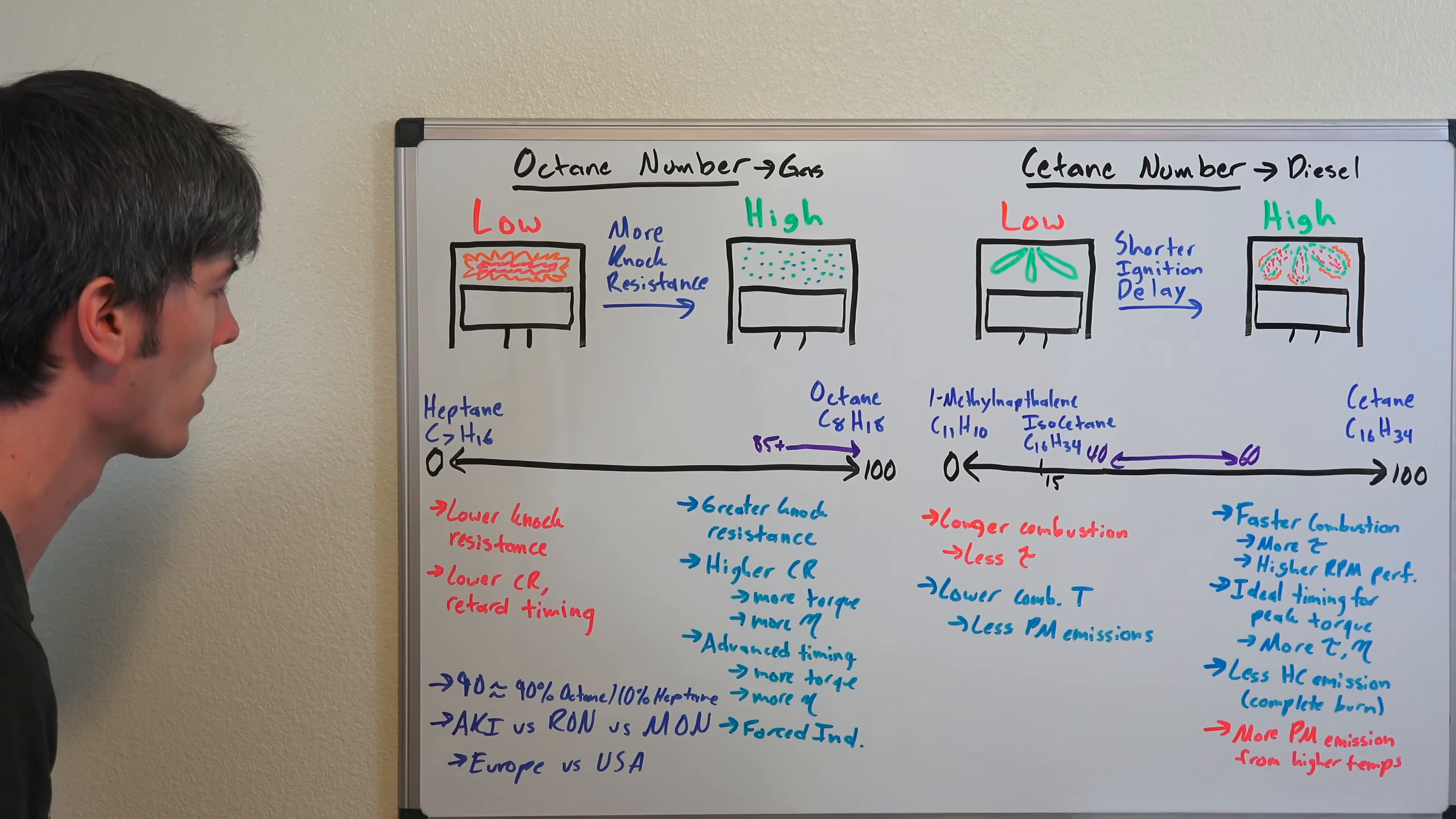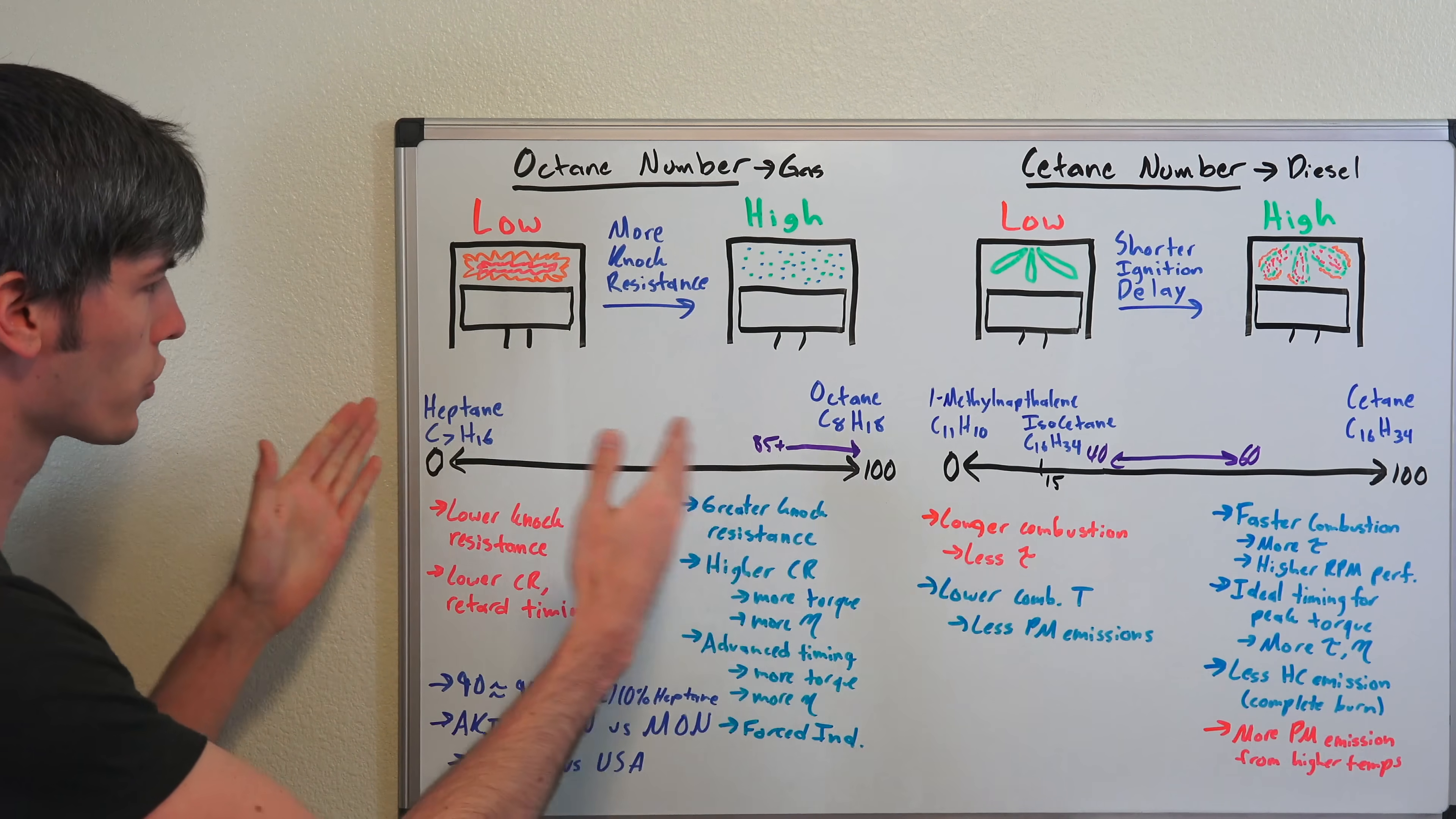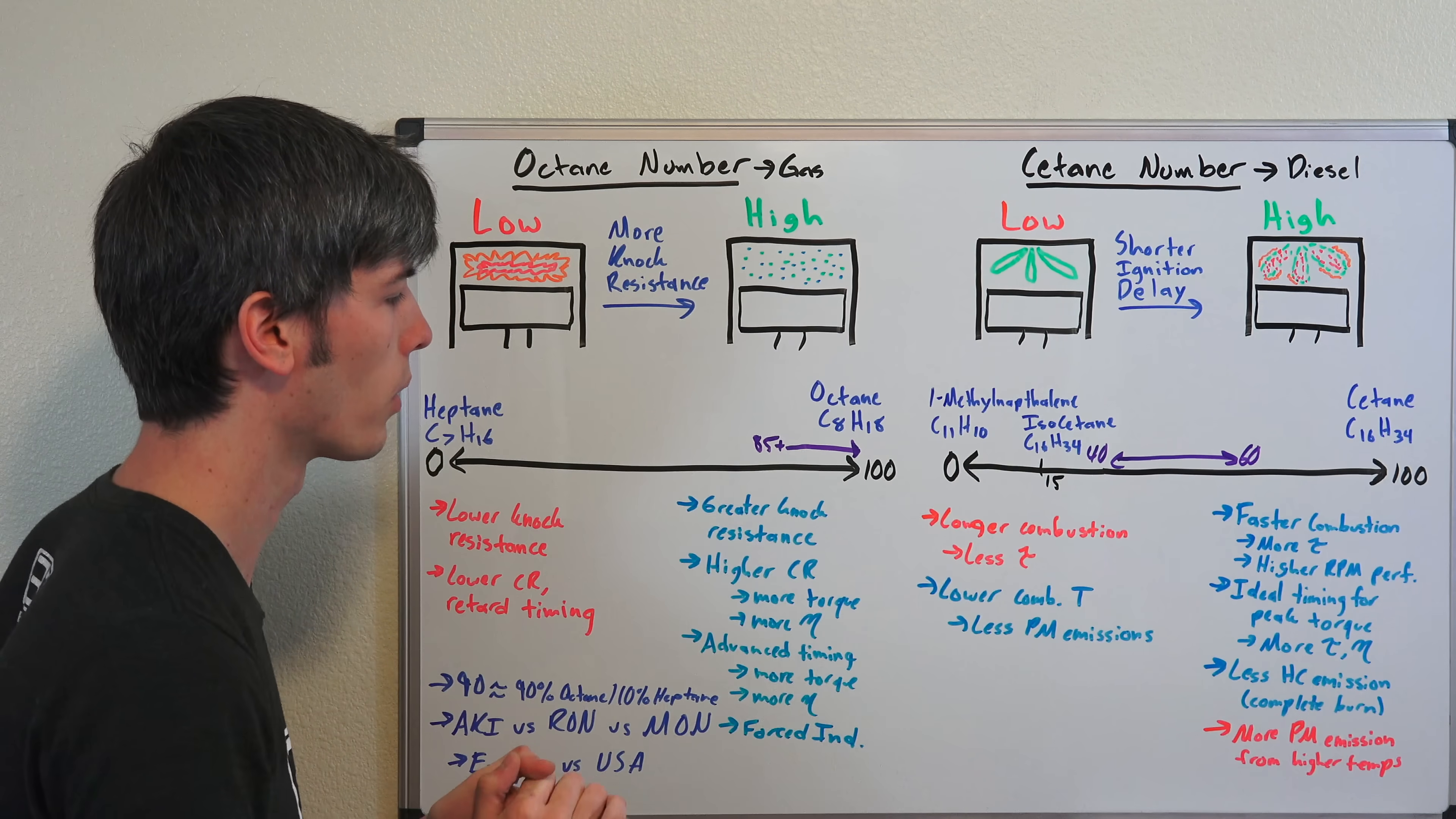Generally, we're talking about this range with heptane being 0 and octane being 100. Both of these are hydrocarbons: heptane C7H16 with 7 carbons and 16 hydrogens, and octane C8H18. Heptane is very likely to ignite from compression, versus octane isn't very likely to ignite from compression.